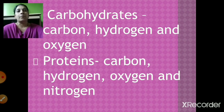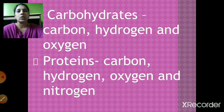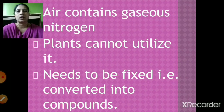Plants produce carbohydrates by the process of photosynthesis. Carbohydrates are made up of carbon, hydrogen and oxygen. Proteins are made up of carbon, hydrogen, oxygen and nitrogen. Now let's see about nitrogen fixation.